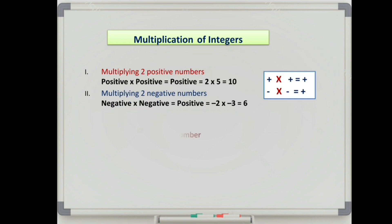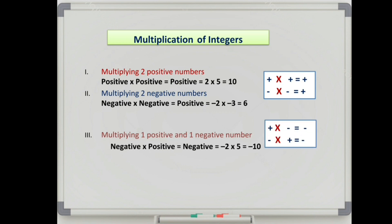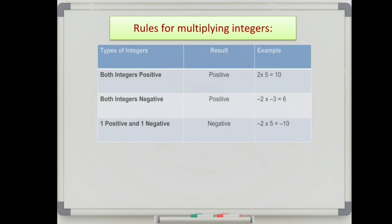If one integer is positive and one is negative, then write the sign as negative and then write the product of the given numbers. For example, minus 2 multiplied by 5: minus 2 is negative and 5 is positive, so write the sign as negative and the product of 2 and 5 is 10, so the answer is minus 10.